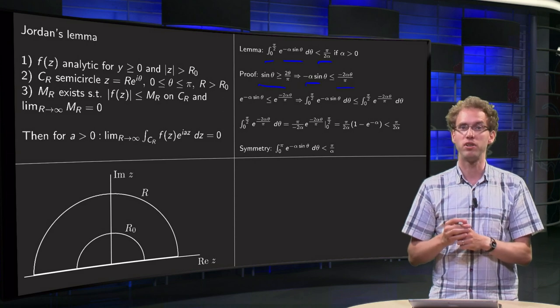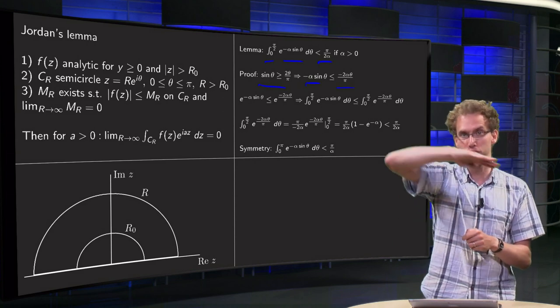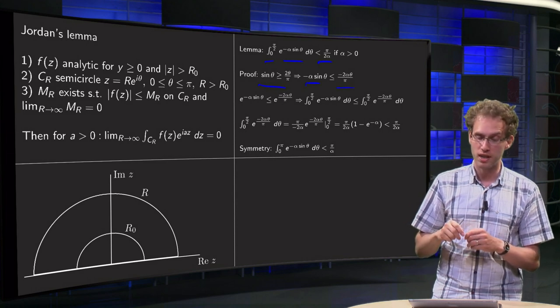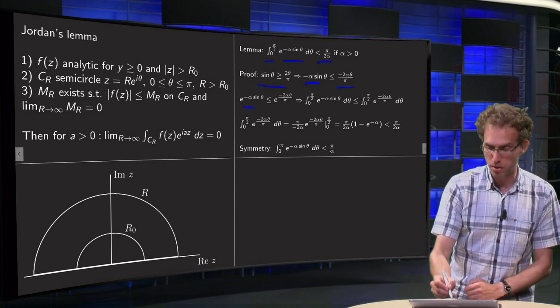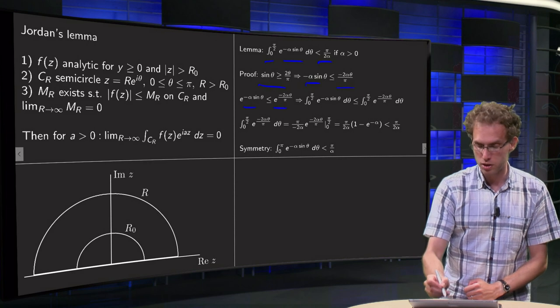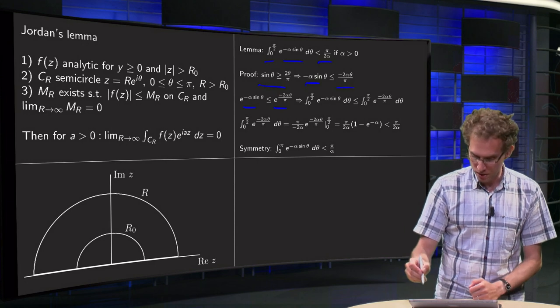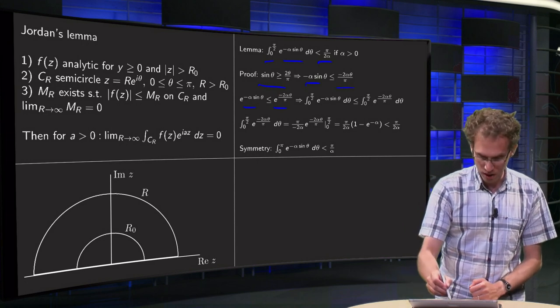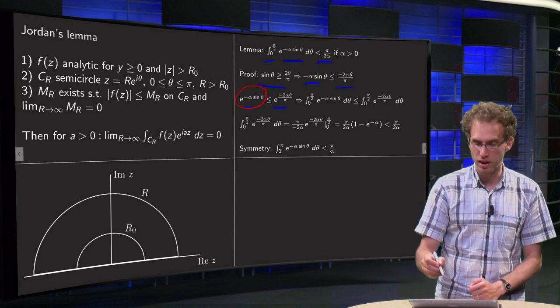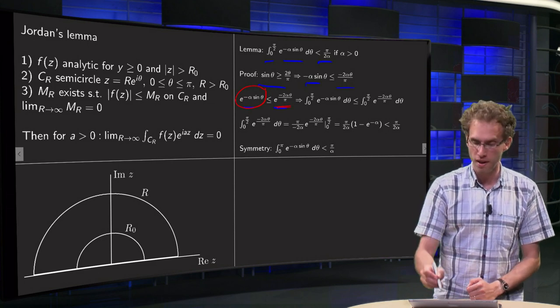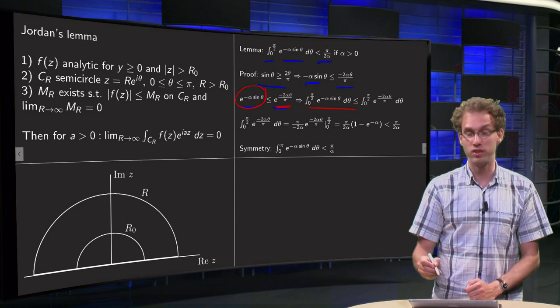Exponential function is a monotonously increasing function. So, e to the power minus α sin θ is smaller or equal than e to the power minus 2α θ over π. We cannot compute the antiderivative of this function, but we can compute the antiderivative of this function. So, the integral of this function which you cannot do is smaller or equal than the integral of the function which we can do.